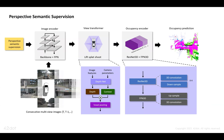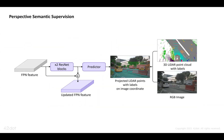Perspective Semantic Supervision is applied to the image encoder. In particular, we use the finest feature level and feed it into two ResNet blocks followed by a predictor. Since image-level semantic annotations are not available,